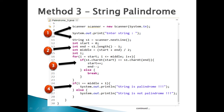Step 2: create four integers — int start = 0, int end = s1.length() - 1 (which holds the index of the last character of s1), int middle = (start + end) / 2 (which returns the middle index of string s1), and int i.